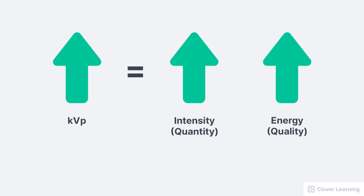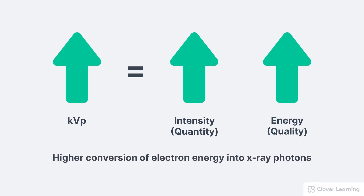KVP is the controlling factor for the energy of the x-ray beam, but it also has a significant influence on the quantity or intensity of the x-ray beam. This is primarily because higher KVP causes a higher percentage of electron energy to be converted into x-ray photons. Remember, only about 1% of electron energy in the tube is actually converted into x-rays. Increasing the KVP makes x-ray production more efficient, so more electron energy gets converted into x-rays.